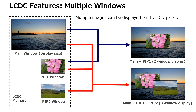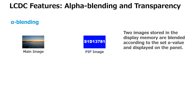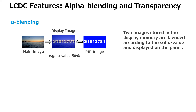The size of each PIP window is configurable up to the available memory size. Additional features are also available, such as alpha blending, which blends two images according to a configurable alpha value.